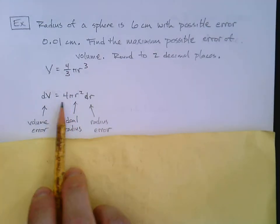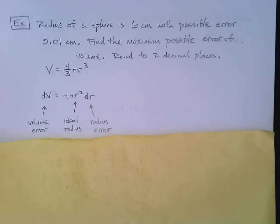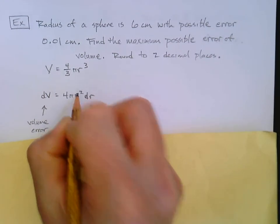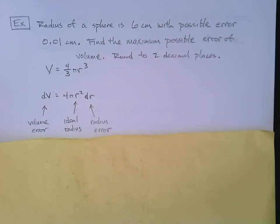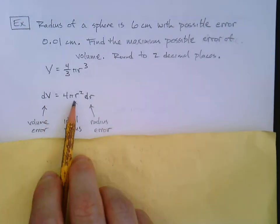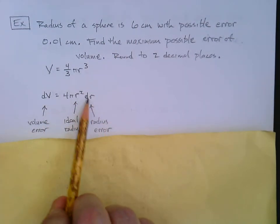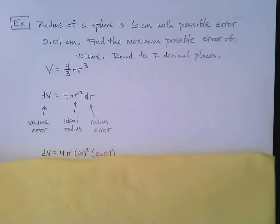So what are we going to do? We're just going to plug these values in. So we know the ideal radius is six. We know dr is the error point zero one. So let's put those in. And we're going to round this to two decimal places. So get pi in there as well. Round it all. Here, dV, the maximum possible error in the volume is 4.52 centimeters cubed when you round it to two decimal places.